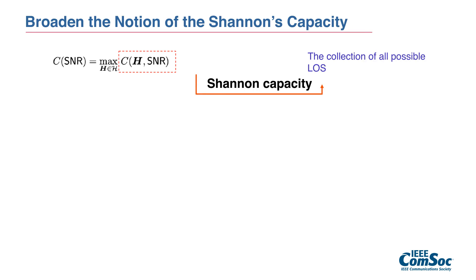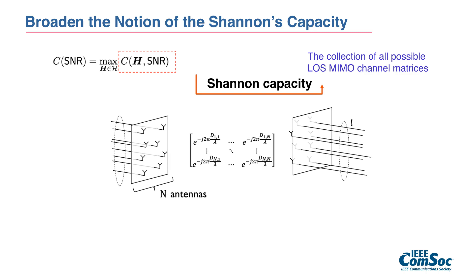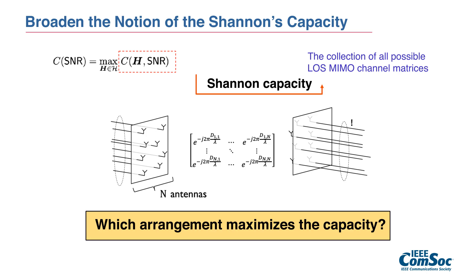Our major contribution is to broaden the notion of classical Shannon's capacity. We defined the capacity as the maximum achievable rate of all possible antenna arrangements in LOS MIMO channels. Unfortunately, finding the exact expression for the capacity is very challenging because there are infinitely many possible different MIMO channels depending on the antenna arrangement.